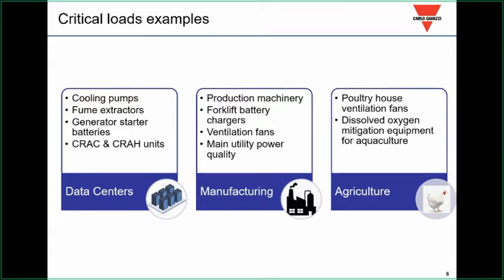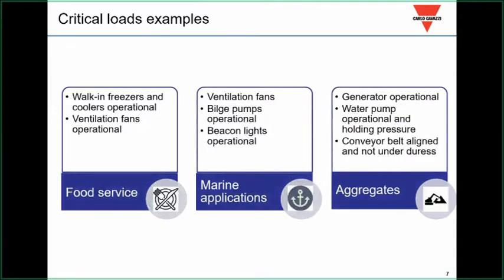Look at agriculture: when you think about what a change in conditions can do—causing catastrophic loss of life, especially in poultry or fish—then we have food service. A data center may deal in billions of dollars, down to a small operator who owns two or three restaurant franchises whose inventory loss is quite catastrophic. Critical loads are scalable. We also have marine applications with bilge pumps and beacon lights, and aggregates where a water pump failure or misaligned conveyor belt under duress causes a downtime condition.